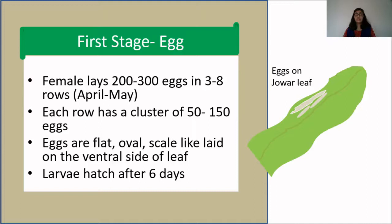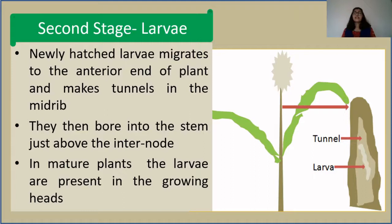Here in this diagram you can see the ventral side of the leaf where, beside the mid rib, the eggs are laid. The second stage is the larval stage. The newly hatched larvae migrate to the anterior part of the plant and make a tunnel in the mid rib. They then bore into the stem just above the internode. The larvae are present in the growing heads. Here in the figure you can see a Jawar plant and a diagrammatic sketch of the tunnel made by the larvae in the anterior part of the stem.